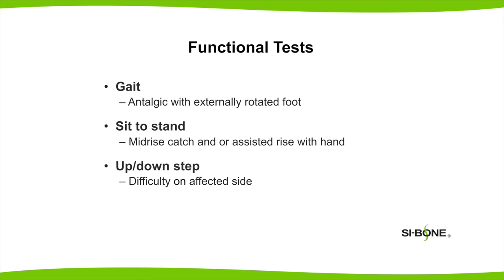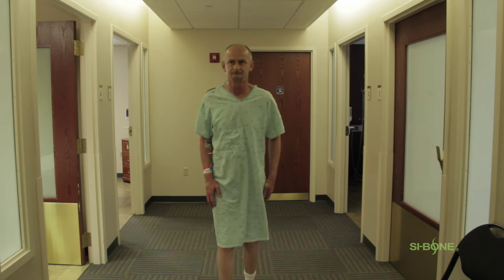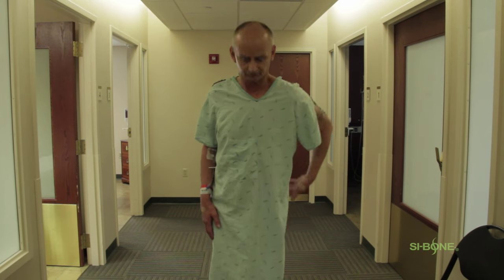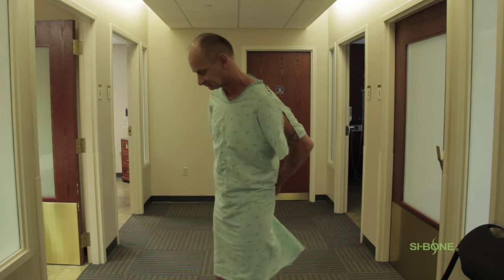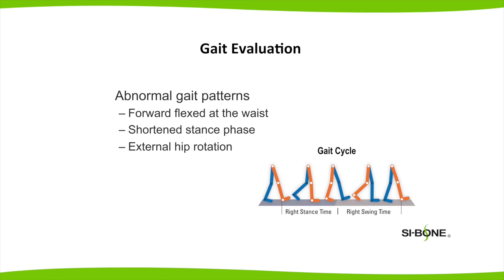Another component of the SI joint exam is functional testing. There is gait, sitting, transitioning back to standing, and stepping up. Gait basically entails having the patient stand up and start ambulating or walking — you're looking for an antalgic gait. They're going to offload the sensitive or painful side and walk primarily on the good limb. They usually are slightly forward bent, their stance phase is shortened, and their foot is slightly externally rotated as they walk.